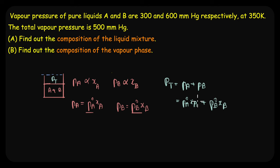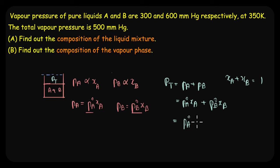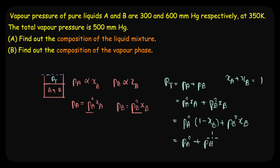We also know that the sum of mole fractions of all components in a mixture equals 1, so XA + XB = 1. Using this, we can rephrase the total pressure as PA°·(1 − XB) + PB°·XB, which simplifies to PA° + (PB° − PA°)·XB. This lets us express total pressure in terms of the mole fraction of one component.